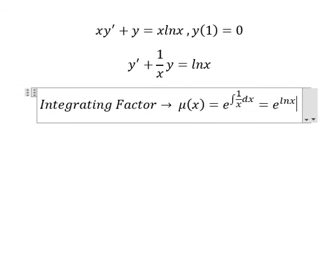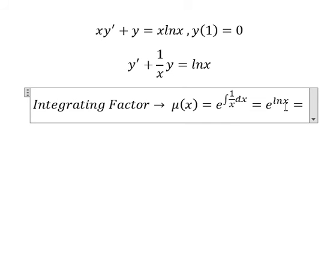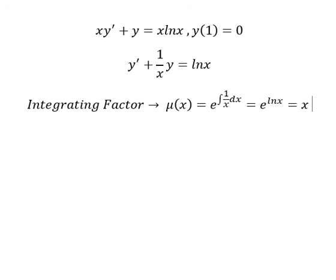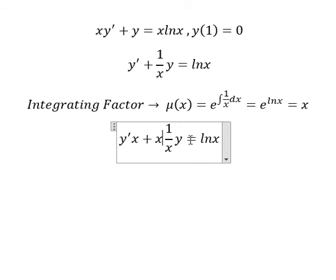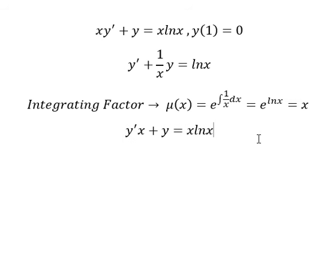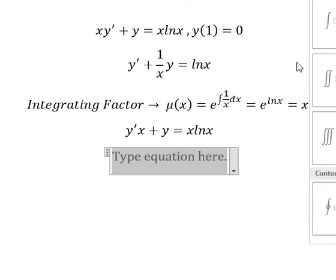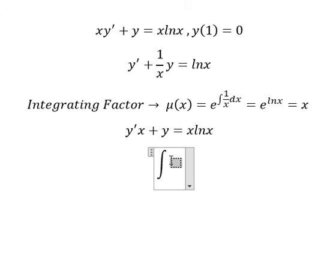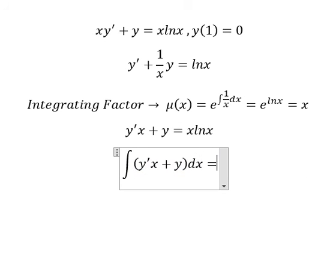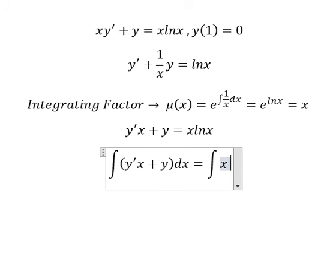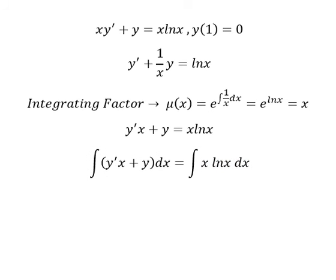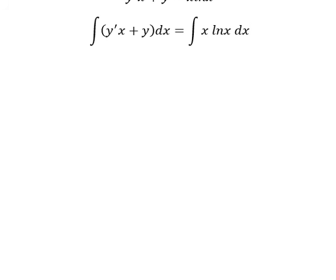We have ln(s) and s here. Next, we multiply both sides by s, and this gives us the number one on the right side. Next, we need to integrate both sides.